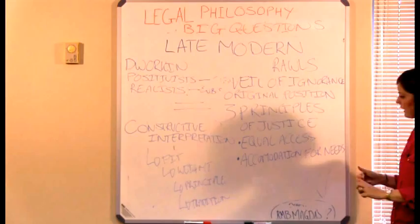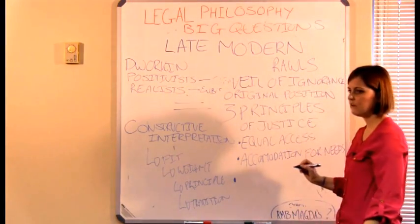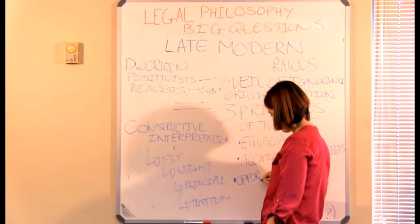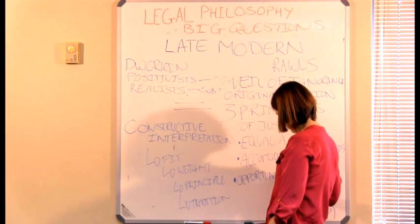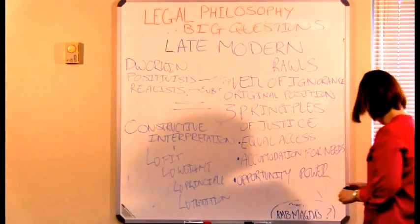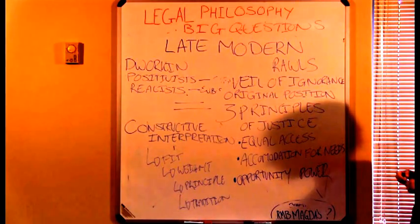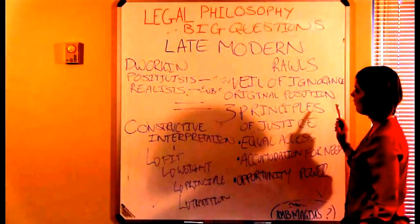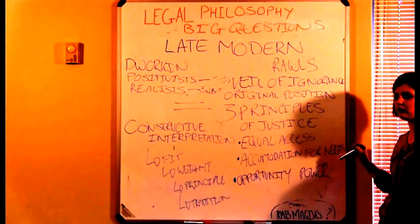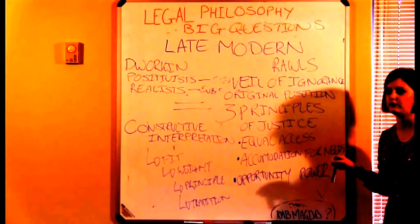And the third thing that we decide is that everybody has equal opportunity to hold positions of power. So when the veil is lifted, we would all have equal opportunity to distribute the Coke. So Rawls says that according to these principles is how we should structure society. This is what law should be.